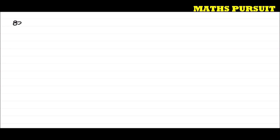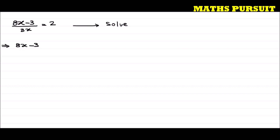The given equation is 8x minus 3 divided by 3x, and that is equal to 2. The question is asking us to solve this equation.